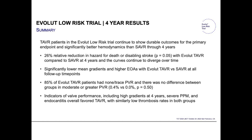TAVR patients in the Evoluted Low-Risk trial showed durable outcomes for the primary endpoint and significantly better hemodynamics than SAVR through four years, with a 26% relative reduction in hazard for death or disabling stroke. Significantly lower mean gradients and higher EOAs with Evoluted TAVR — which is supra-annular — versus SAVR at all follow-up time points. 85% of Evoluted TAVR patients have no or trace paravalvular regurgitation (PVR), with no difference in moderate or greater PVR. Indicators of valve performance including mean gradient at four years, severe PPM, and endocarditis overall favored TAVR, with similar low thrombosis rates in both groups.